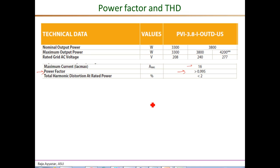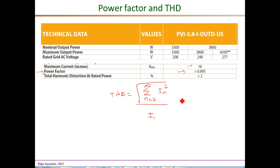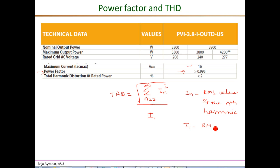THD is the ratio of the harmonic content in the current waveform to its fundamental component. A commonly used definition is: THD = sqrt(sum from n=2 to infinity of In²) divided by I1, where n is the order of the harmonic, In is the RMS value of the nth harmonic component in the line current, and I1 is the RMS value of the fundamental component. So it is the ratio of the total harmonic content to the fundamental component in the line current.